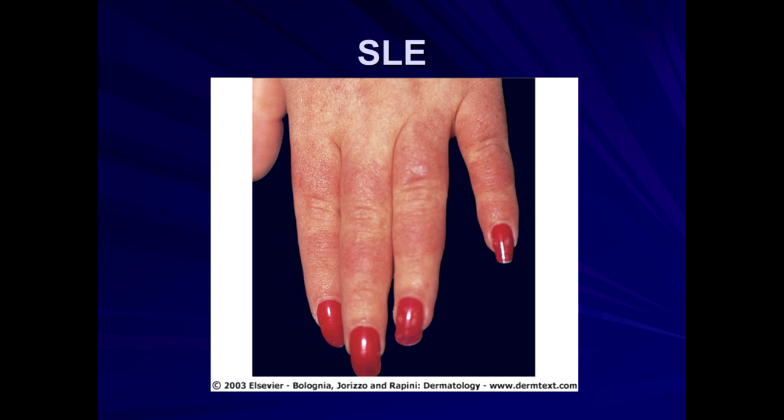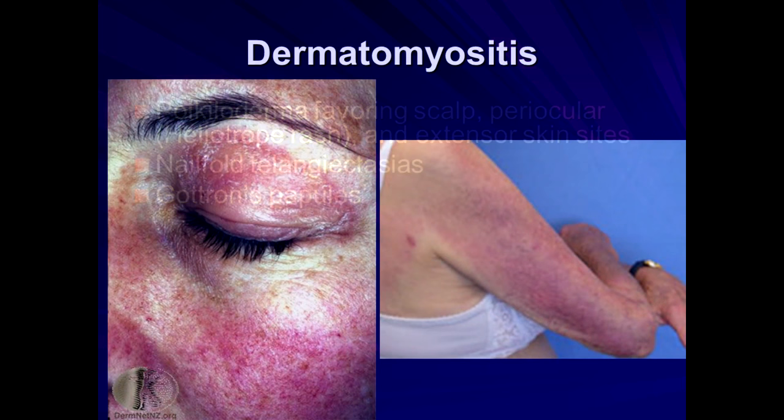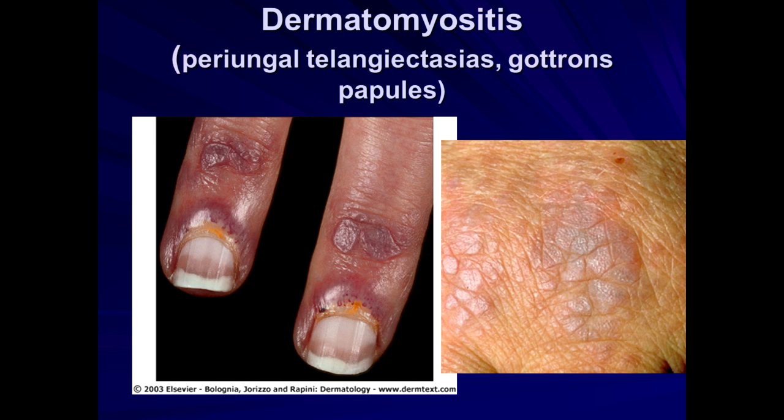Dermatomyositis is very different. They develop a heliotrope rash, nail findings, and papules. They can develop a rash involving the periorbital area, a photodistributed rash. These patients typically present with joint pains and skin findings. They can have telangiectasias under the nail folds and develop papules called Gottron's papules.